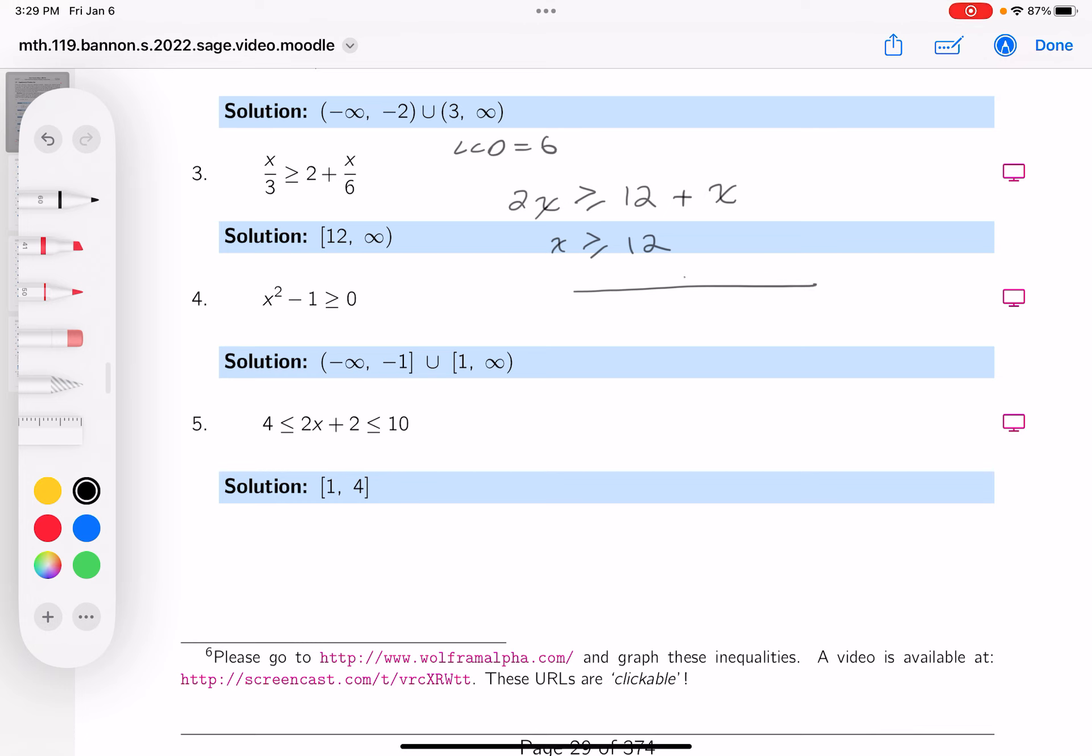Put my number line down. On the number line, what goes on the number line? The number, which is 12. X could be equal to 12. I shade it in. What else could X be? It could be greater than 12.